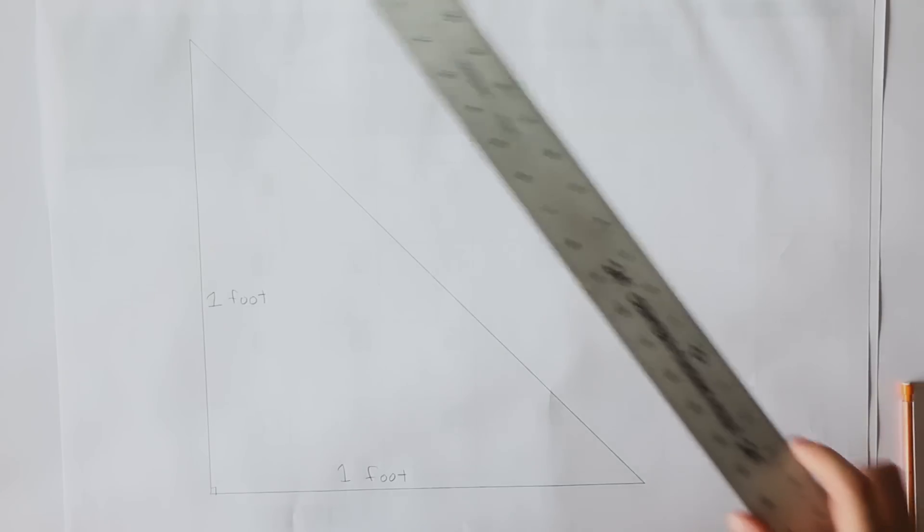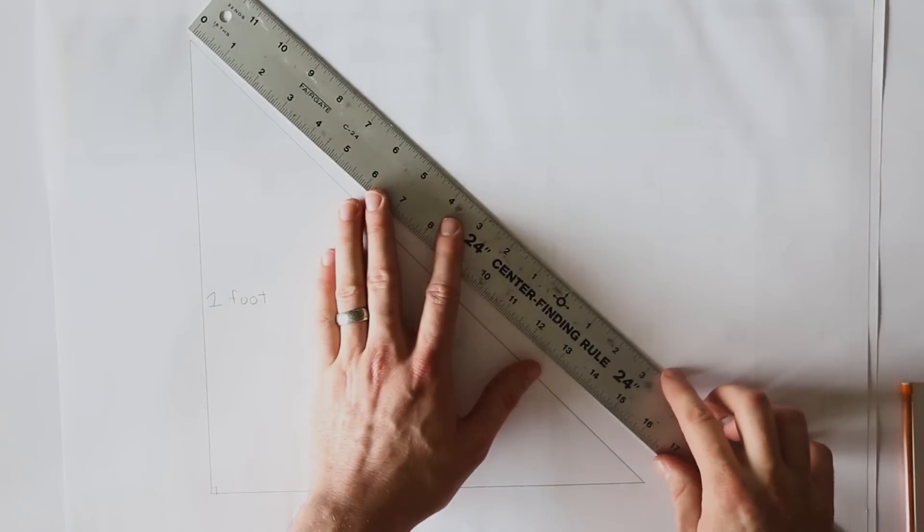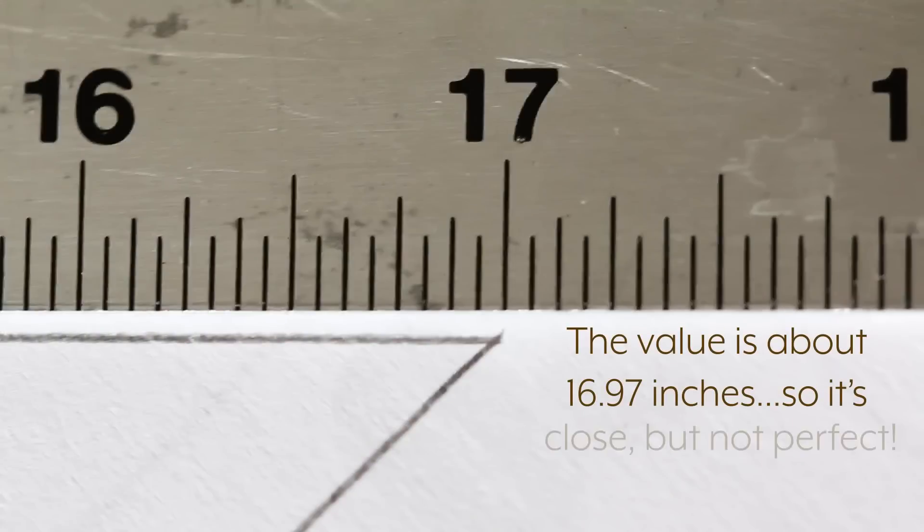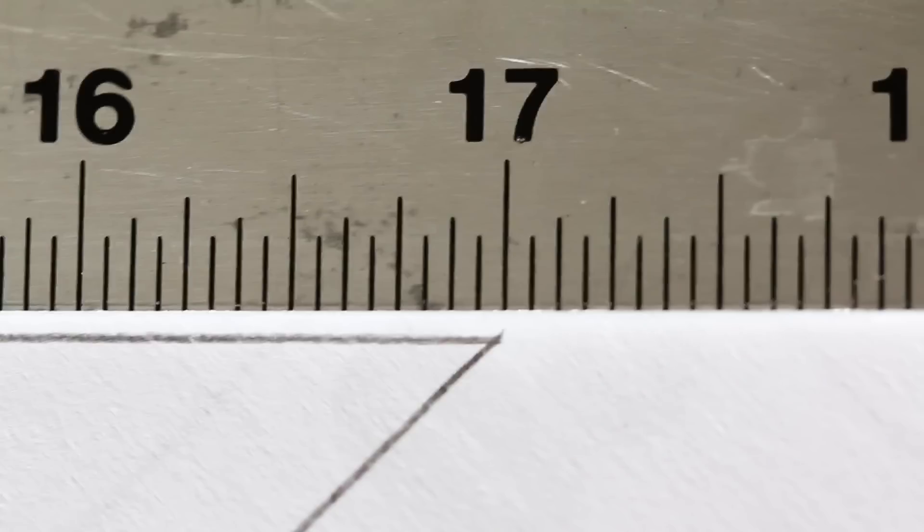But here's what's really interesting. Even if you imagine a perfect ruler, and a perfect artist, which I'm not, the length of this side will never land on a tick mark, not perfectly. As it turns out, we need a new kind of number here, and that's called an irrational.